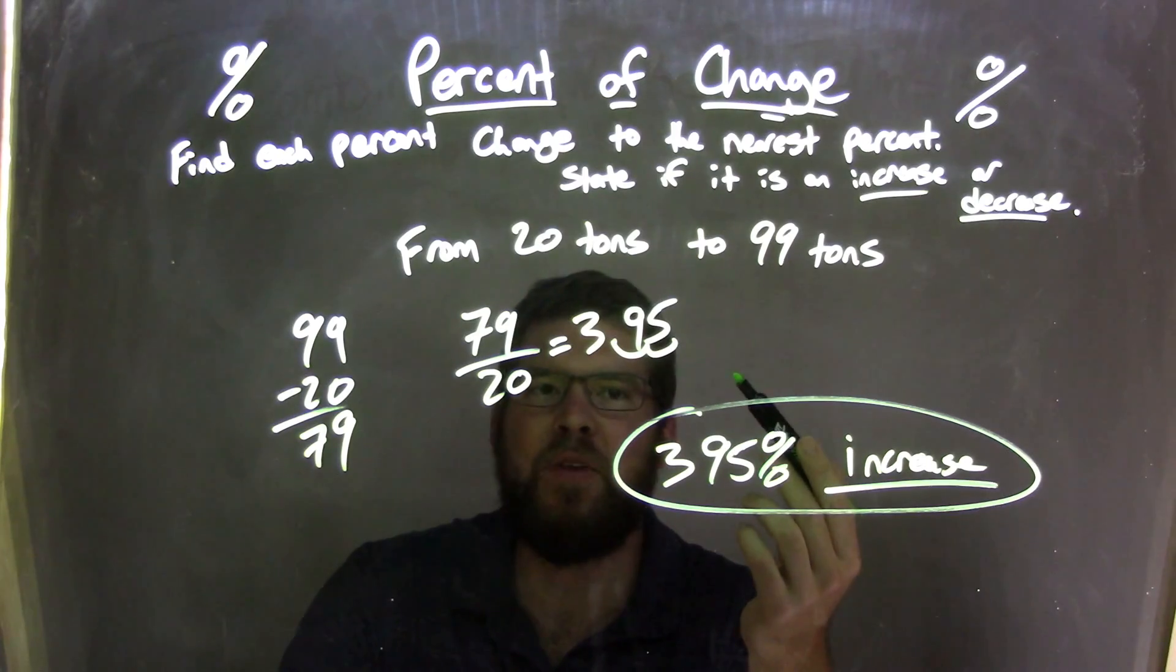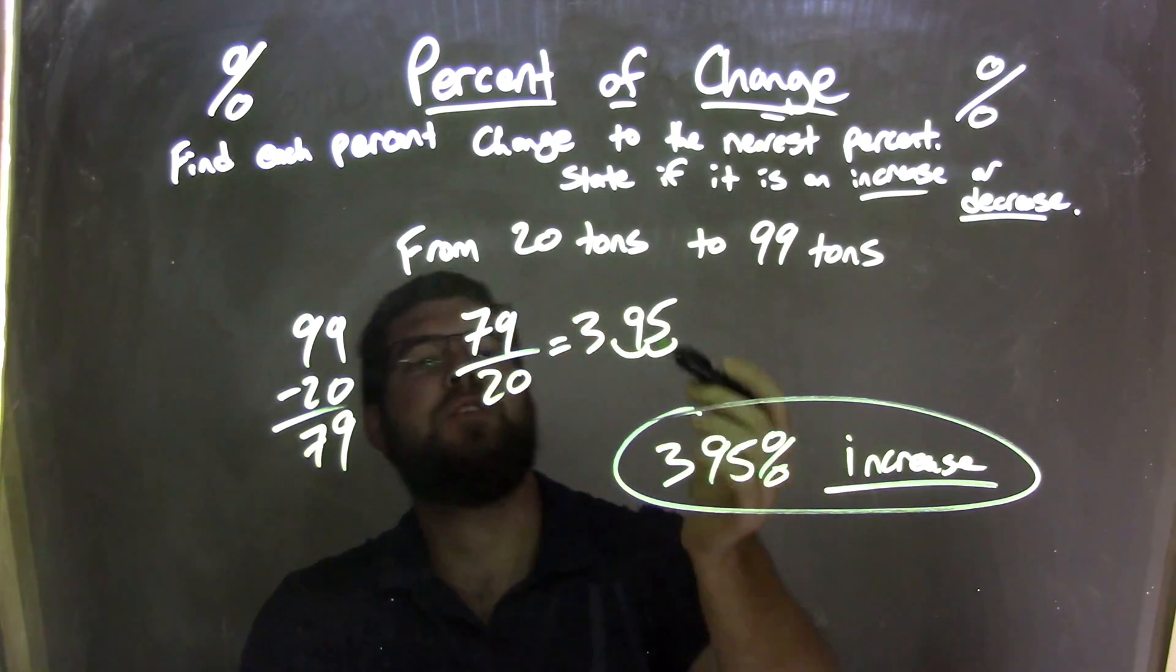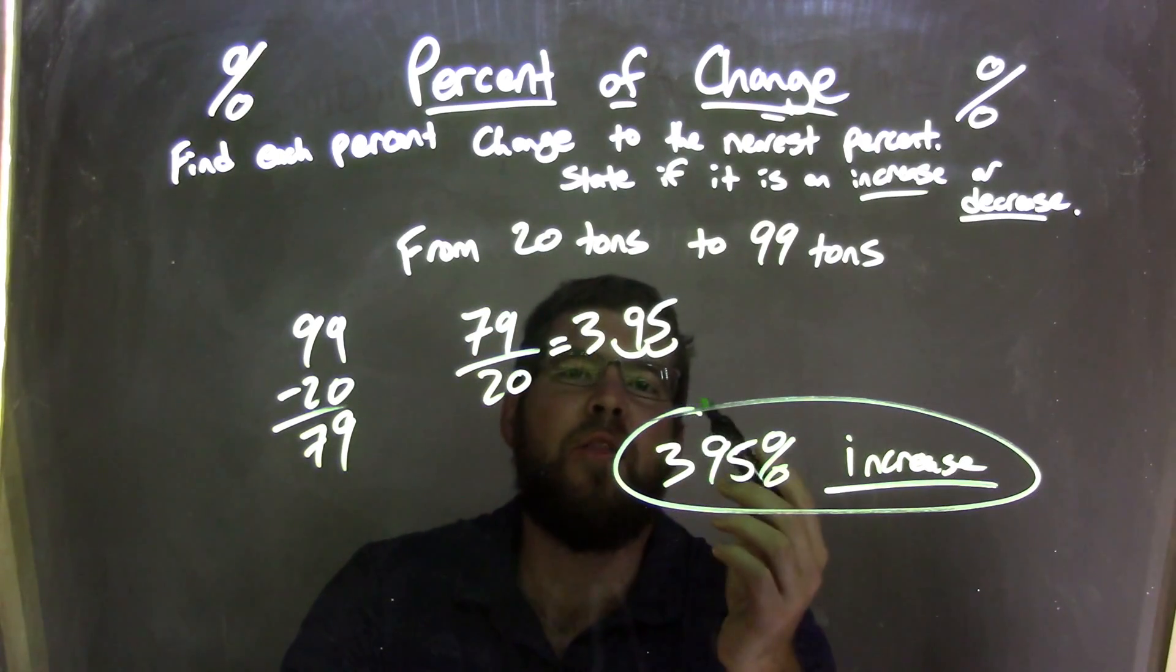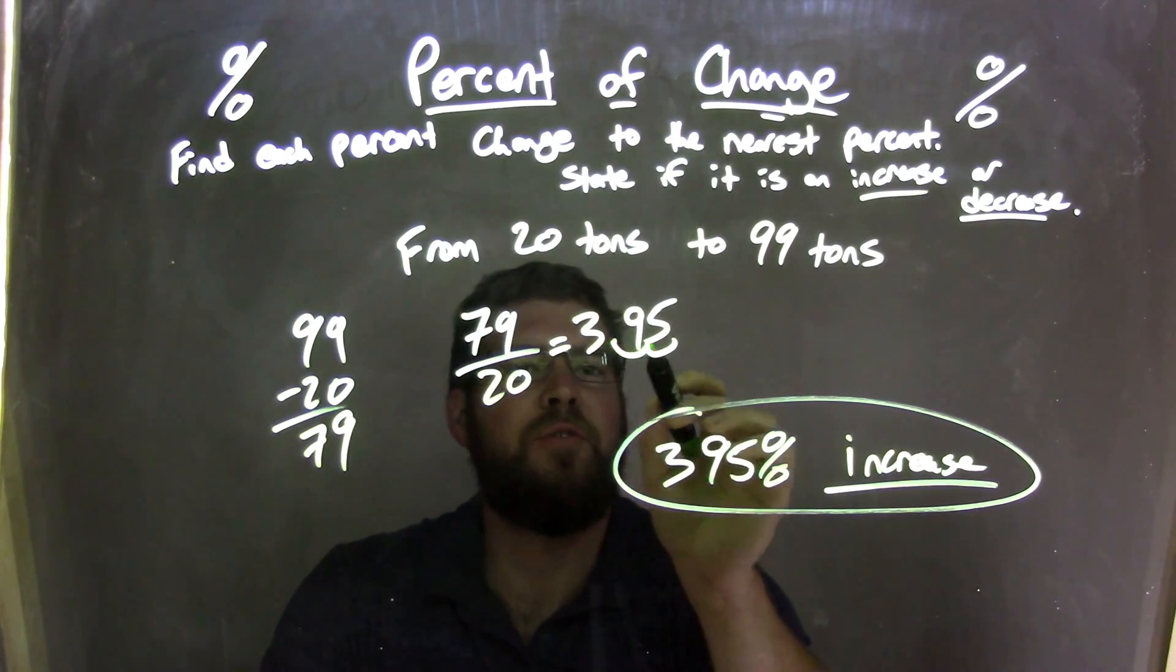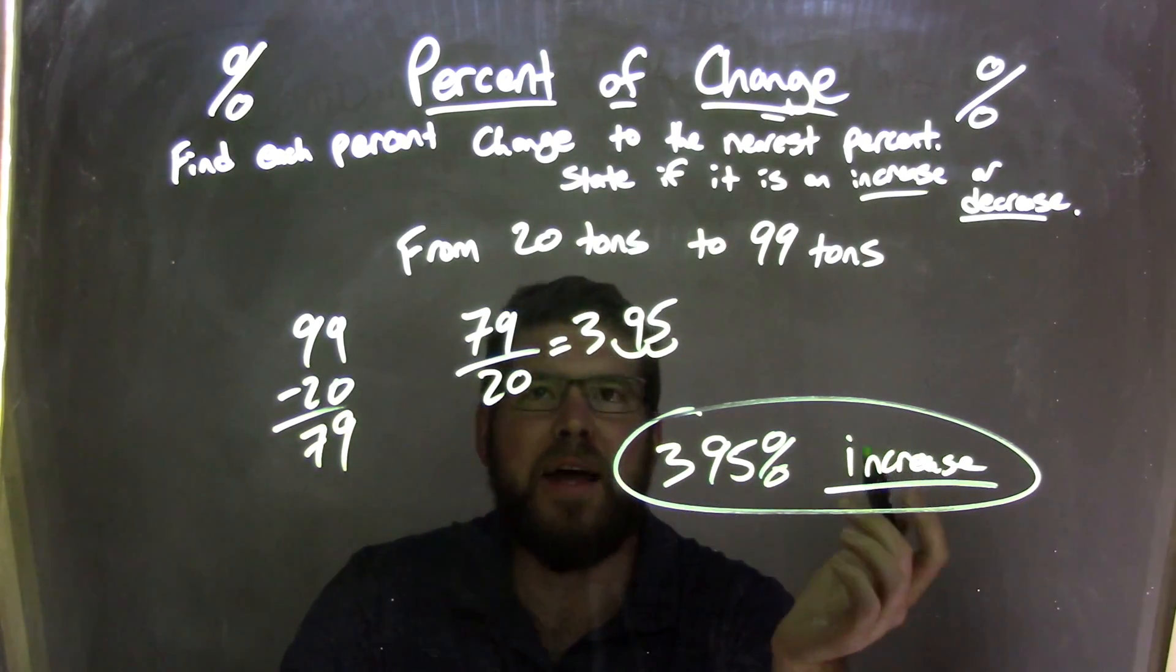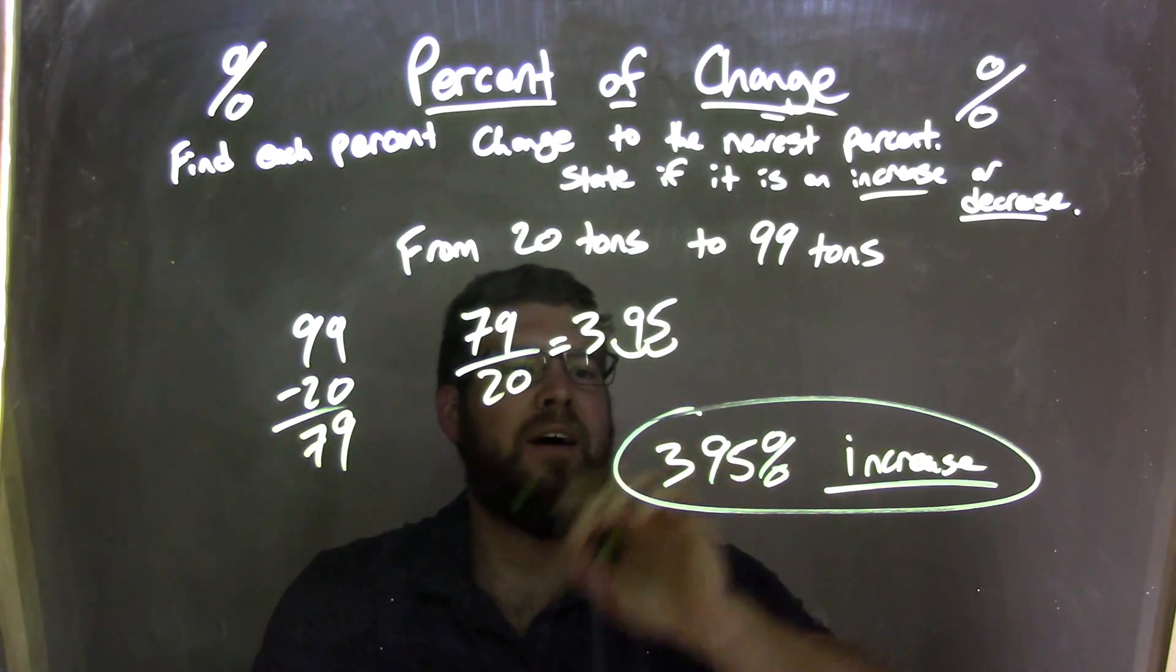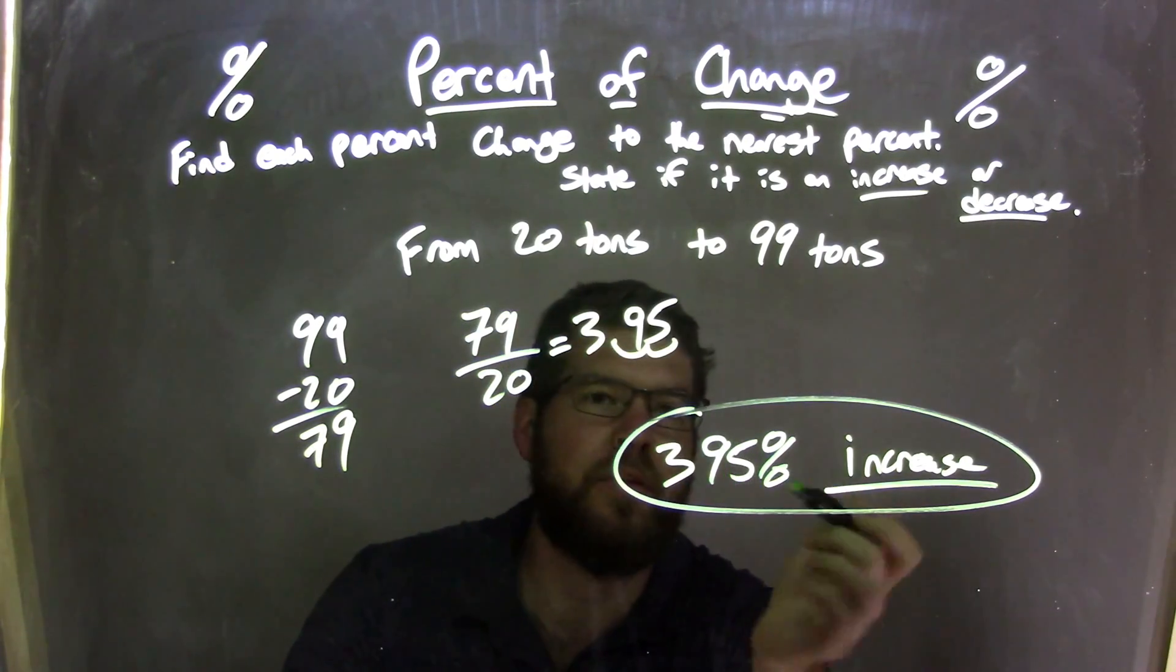We need to convert that 3.95 into a percent. Took a decimal and made it to a percent. 3.95 converted to a percent. Moved two units to the right. We got 395 percent. And so, our final answer of from 20 tons to 99 tons is a 395 percent increase. Thank you.